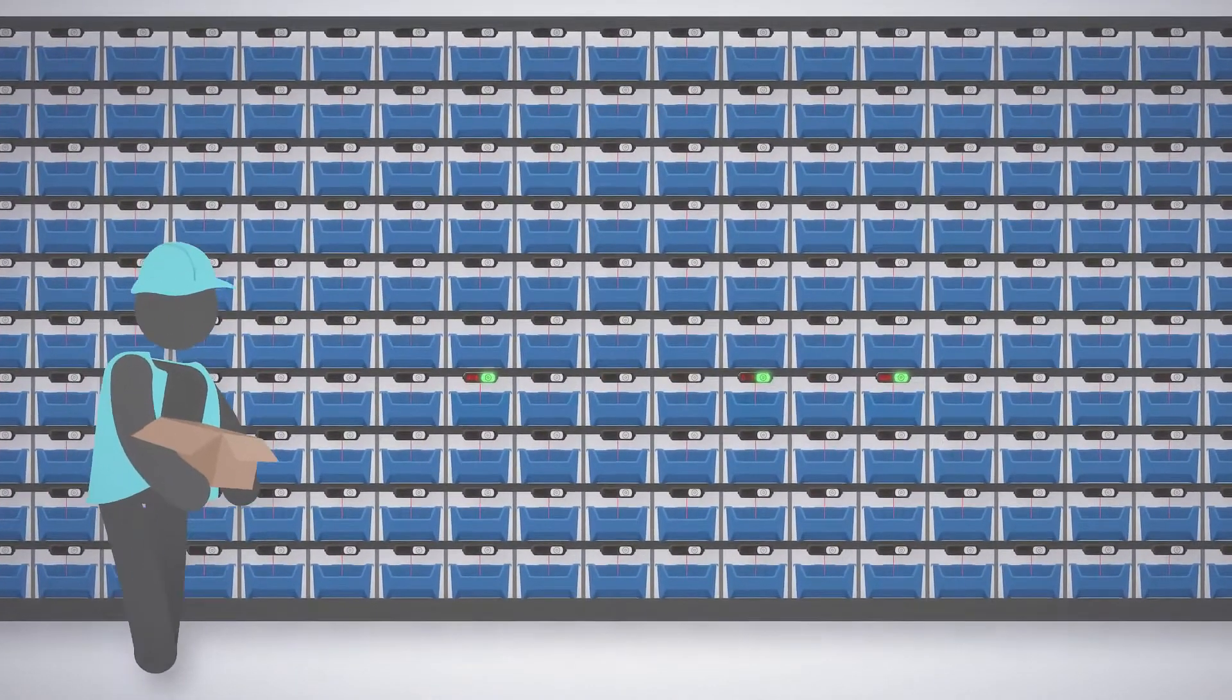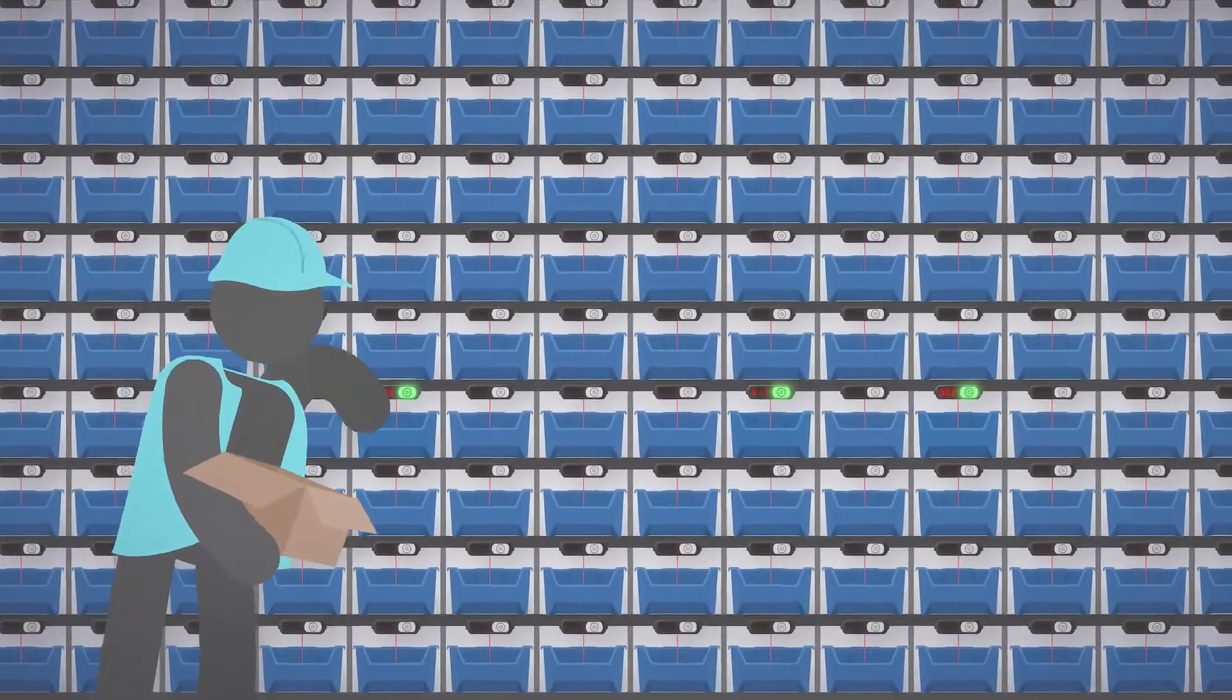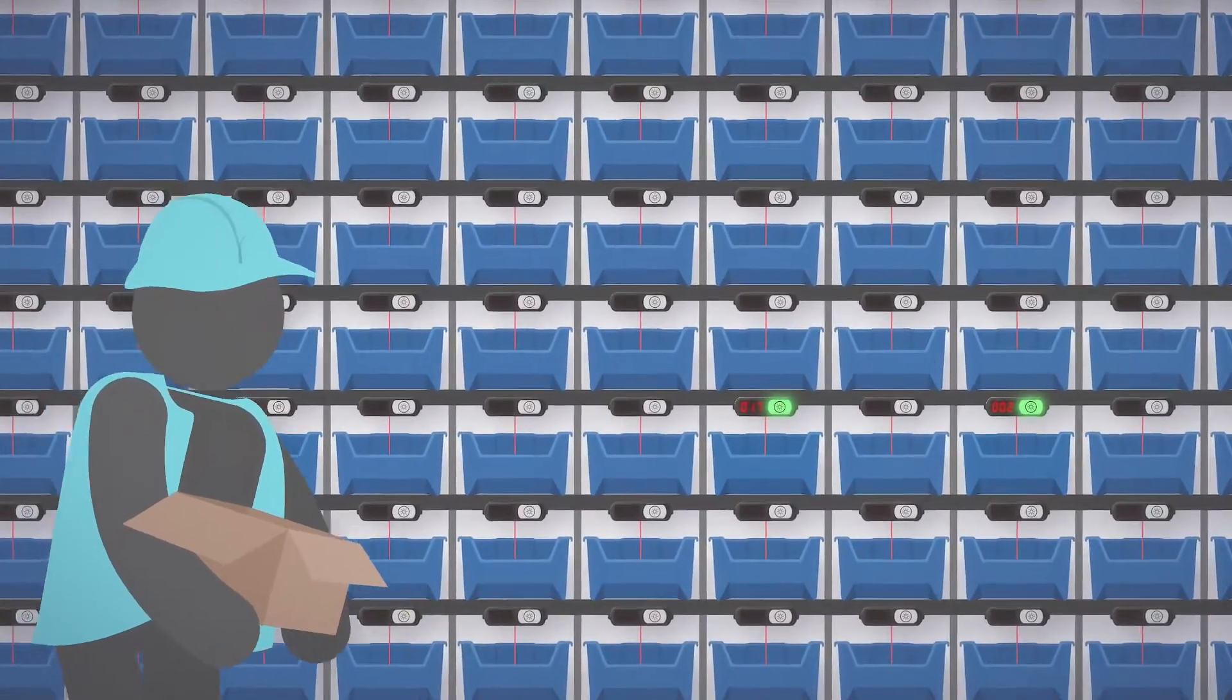In kitting applications, pick-to-light helps workers spend less time searching rows of bins and more time assembling kits.